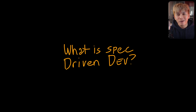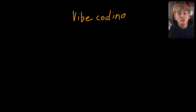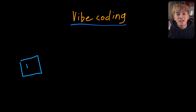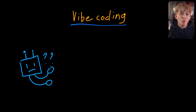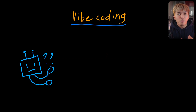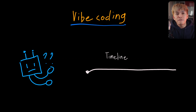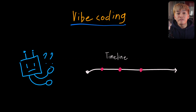What is spec-driven development? Spec-driven development solves one of the biggest issues of Vibe Coding, and that is AI hallucinating or misinterpreting the context. When you implement a new feature with Vibe Coding, it's quite difficult to keep track of all of the decisions that were made along the way.